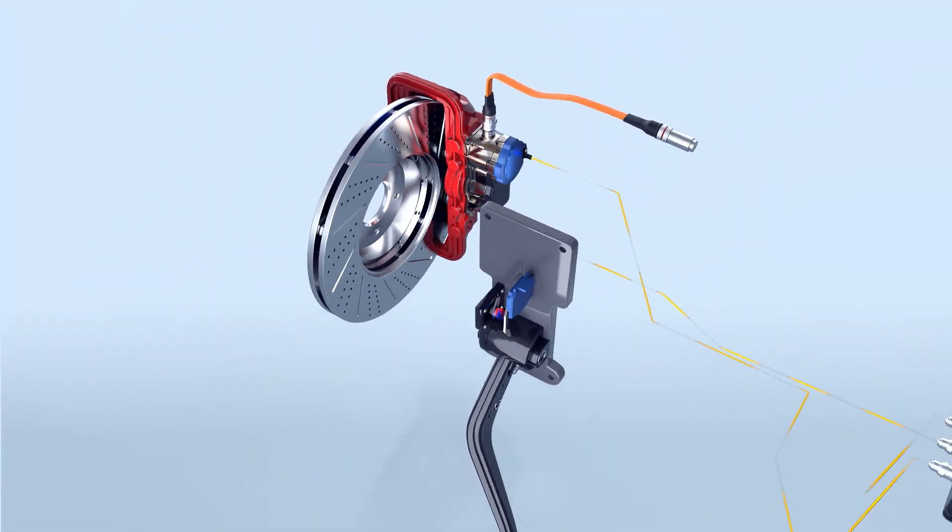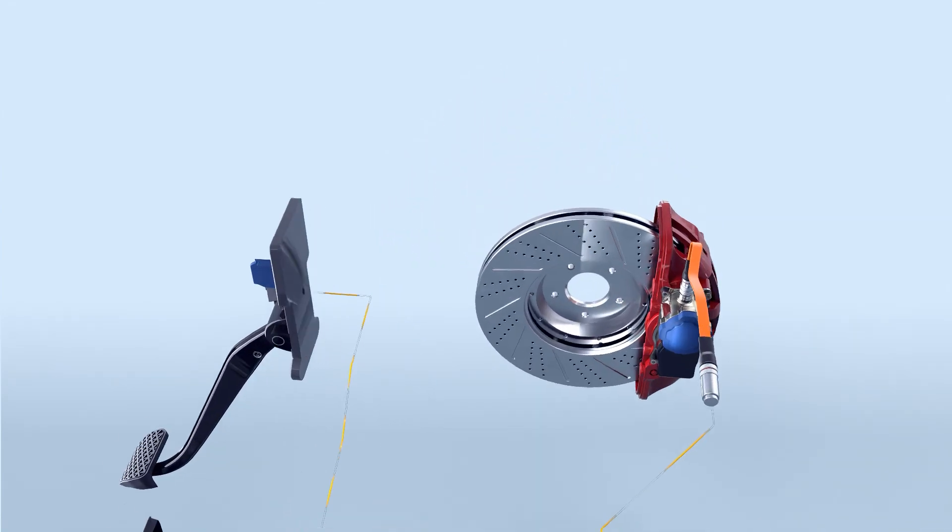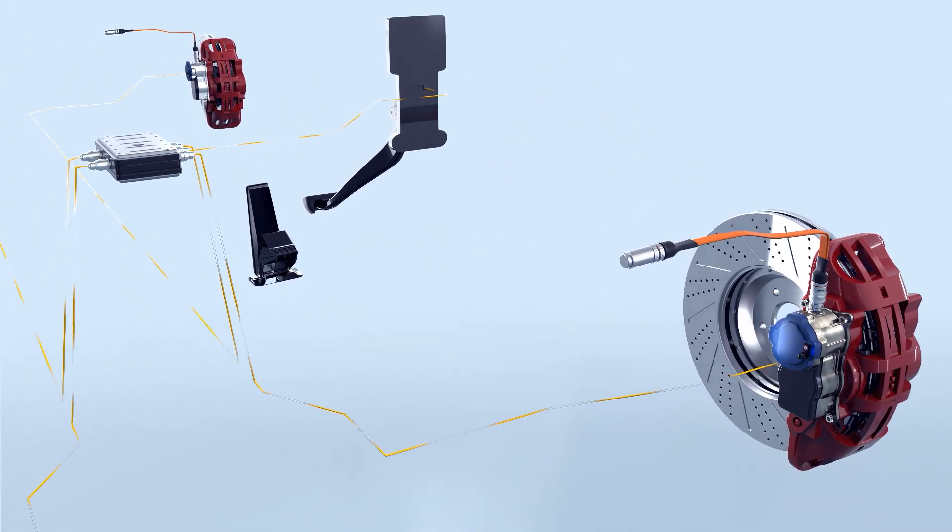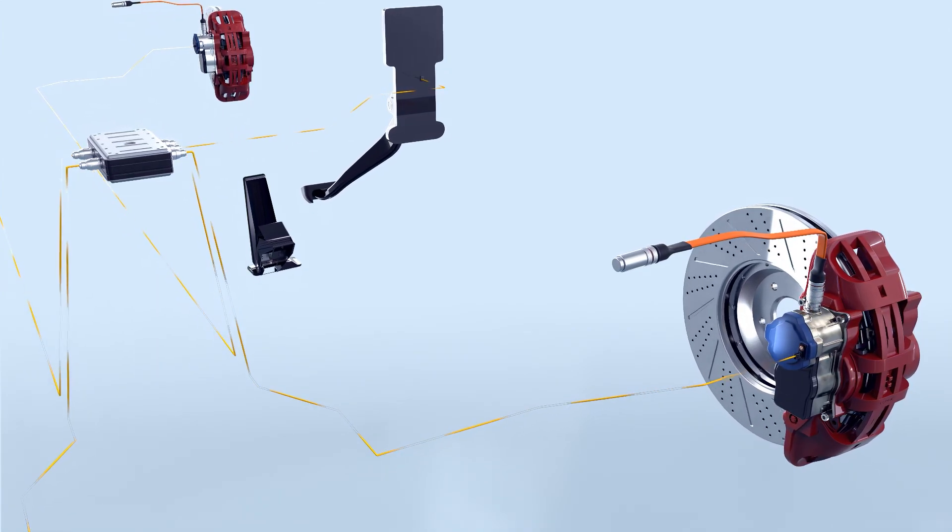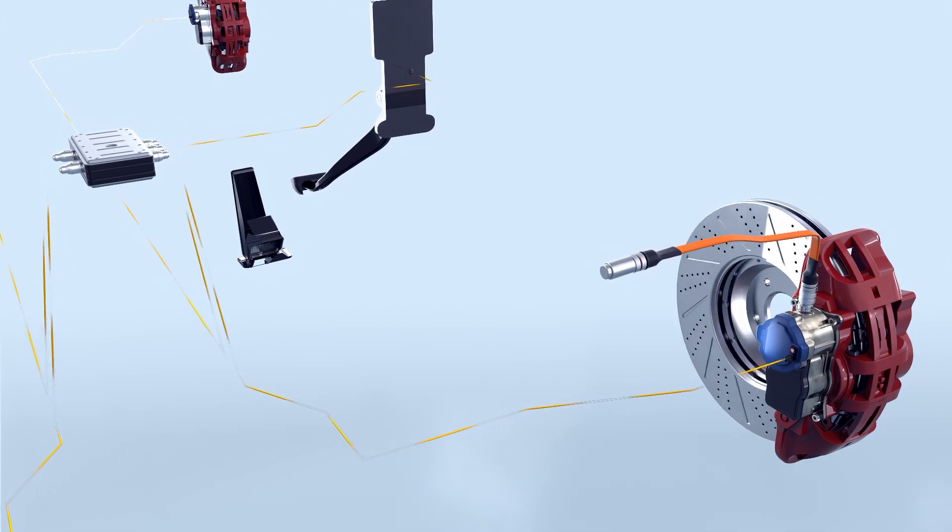As we focus on the front axle brake, we gain insight into the sensor's pivotal role in the braking process. Its versatility becomes apparent through its flexible interface options, such as PWM or SCNT, demonstrating its capacity to seamlessly adapt to the precise demands of the brake system.